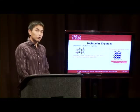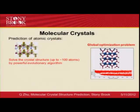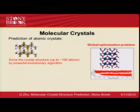In the last decades, people have devised a few methods to predict crystal structure. Among them, USPEX — the Universal Structure Predictor of Evolutionary Crystallography — is one of the most efficient methods to predict molecular crystal structures. It can predict crystal structures containing up to 100 atoms using a powerful evolutionary approach.